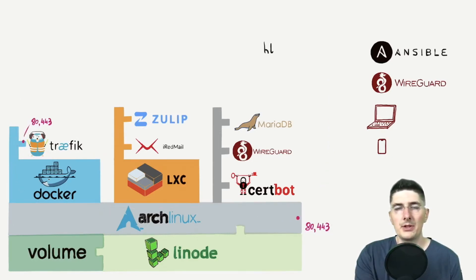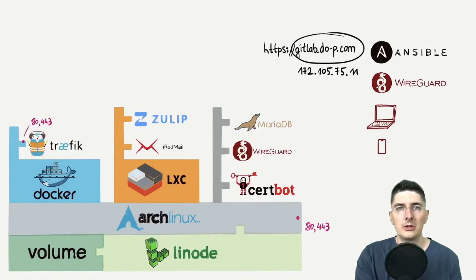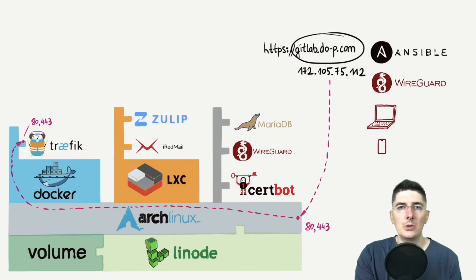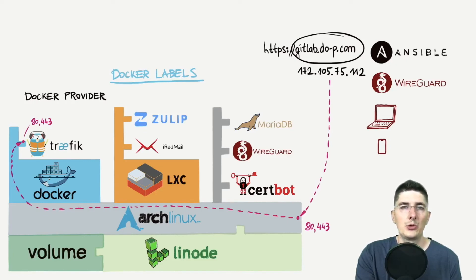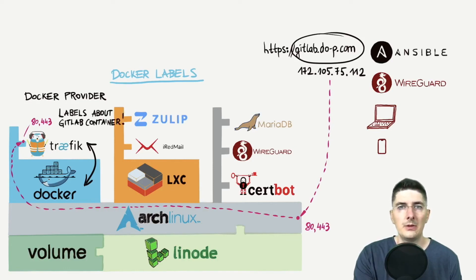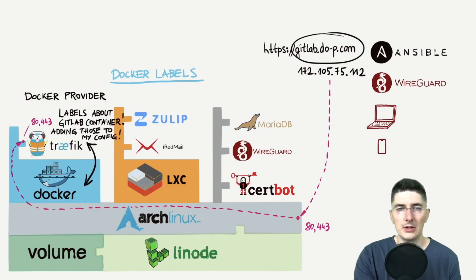In case Traefik needs to route something to another Docker container — for example, GitLab after we deploy it — it's even easier. In that case, we'll use the Docker provider. For that to work, we'll have to run a Docker container with some additional labels. You should read the documentation on those, but I'll talk more about them later. Traefik will communicate with the Docker engine and monitor for those labels. When it finds one of interest, it will add that information to its config, and it will then know how to handle those packets and deliver them to their destination.